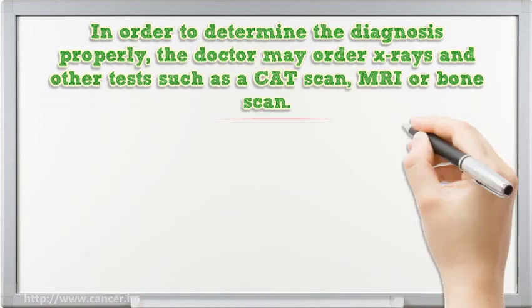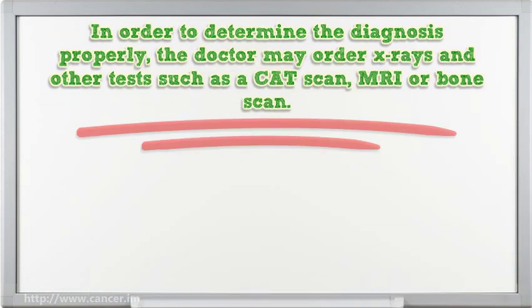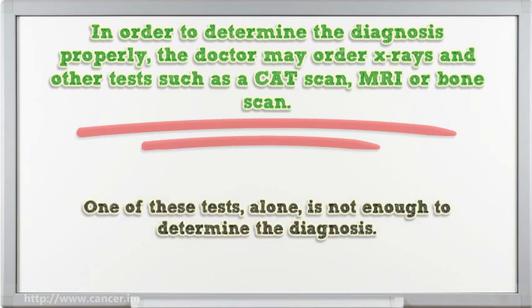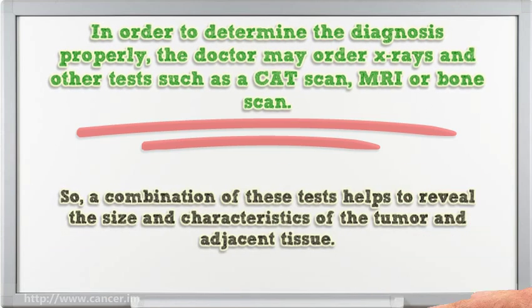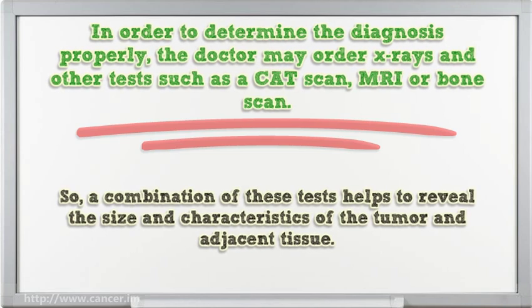In order to determine the diagnosis properly, the doctor may order X-rays and other tests such as a CAT scan, MRI, or bone scan. One of these tests alone is not enough to determine the diagnosis, so a combination of these tests helps to reveal the size and characteristics of the tumor and adjacent tissue.